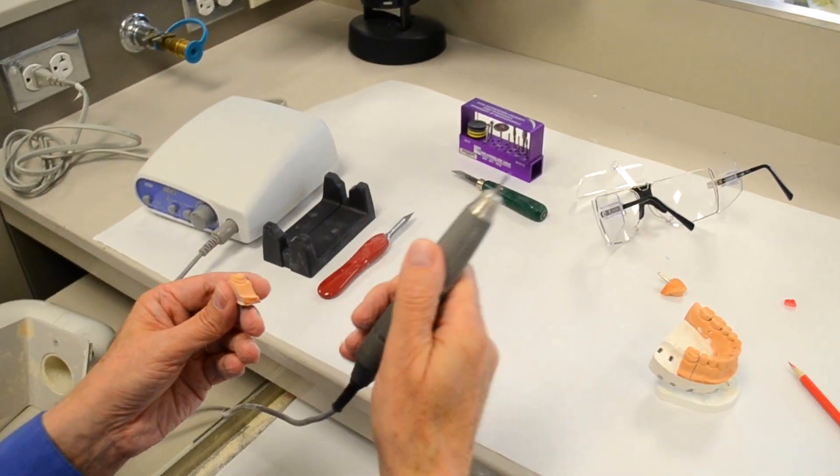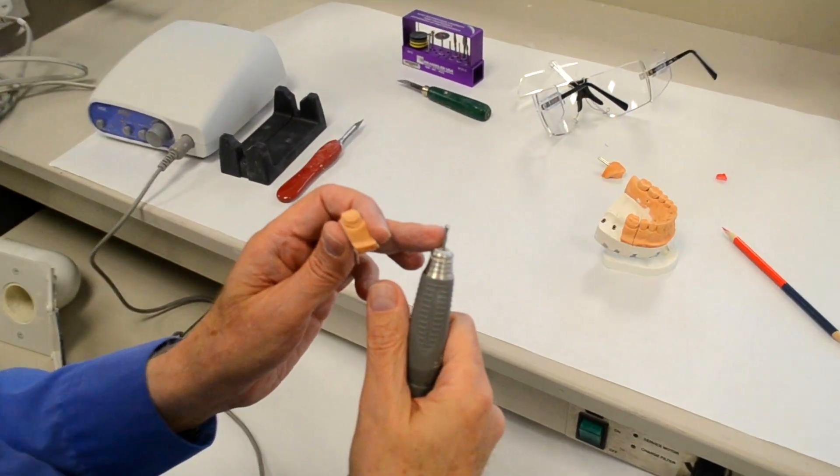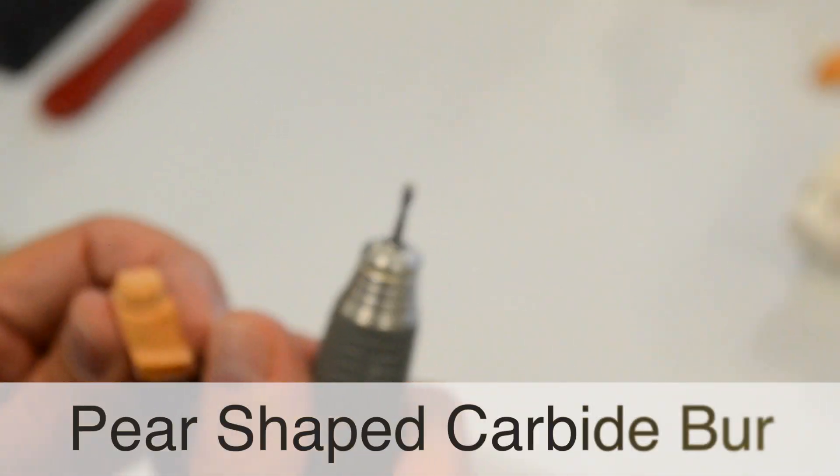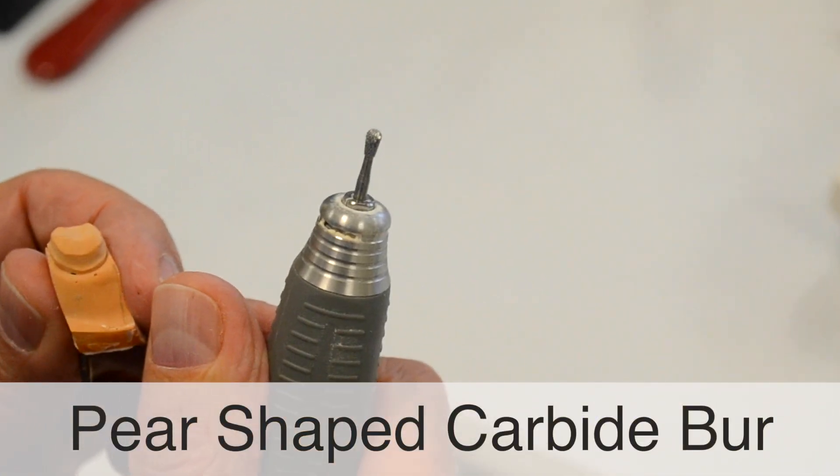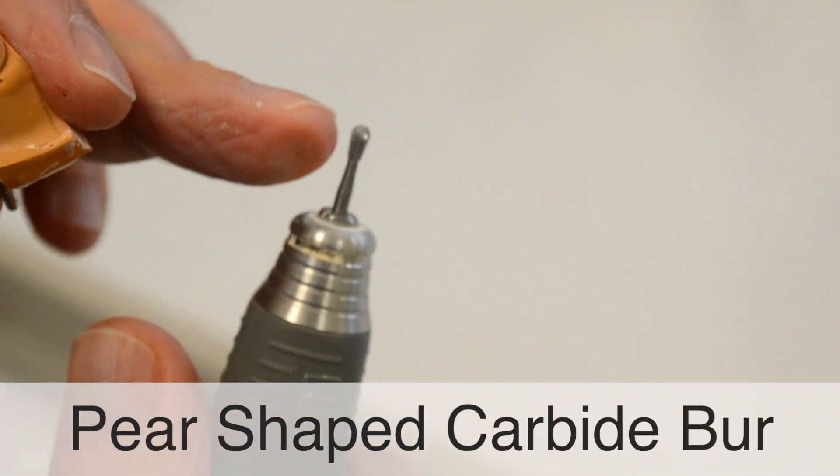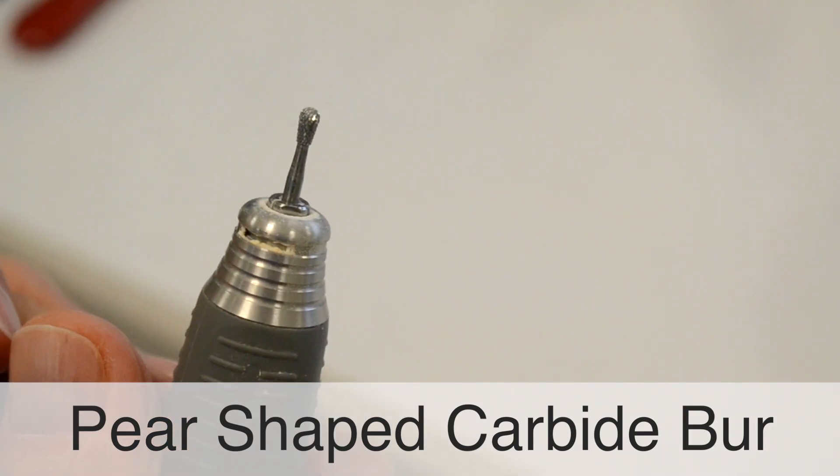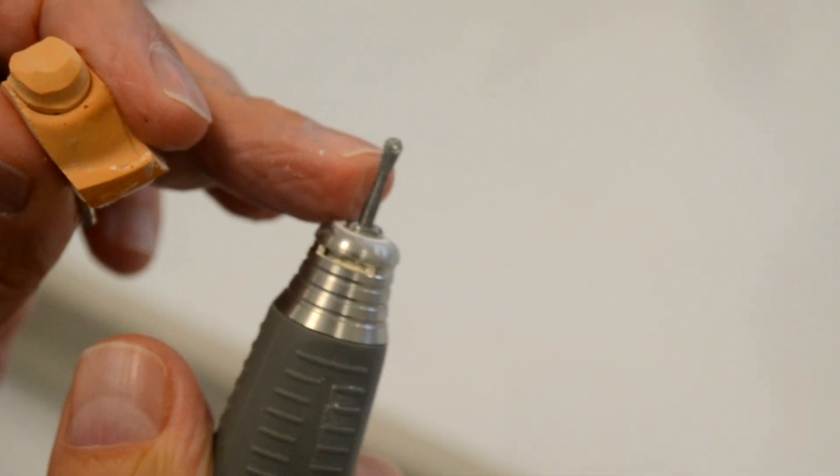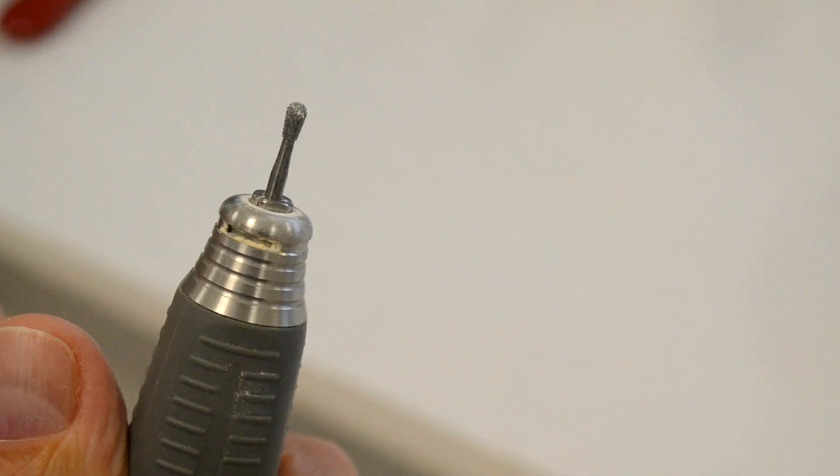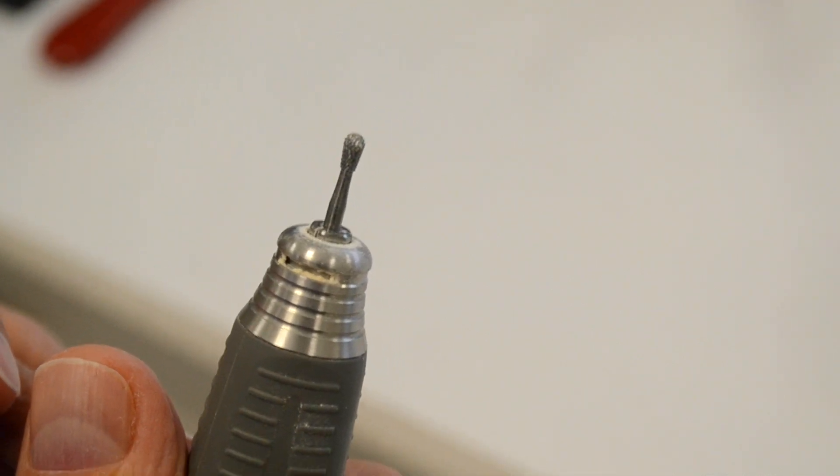The instrument that I like to use for die trimming is the pear-shaped slow speed burr. It's a carbide laboratory burr. It has a cutting edge on the tip that is approximately two and a half millimeters in diameter. The cutting edge along the side of the burr is approximately five millimeters in length. So it's the ideal burr for die trimming.